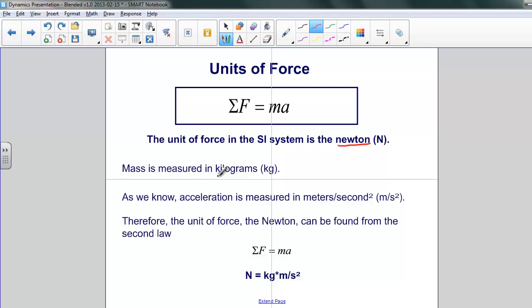So we can relate using Newton's second law, the force and mass and acceleration. So if we use the unit Newton on the left, and we substitute the units for mass, kilograms, and acceleration, meters per second squared, on the right, what we get is this relationship that the Newton is equal to kilogram meter per second squared.